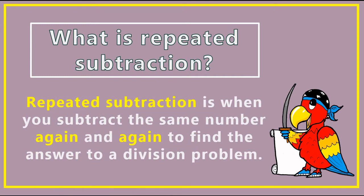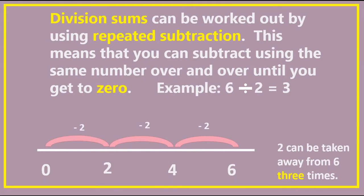Repeated Subtraction is when you subtract the same number again and again to find the answer to a division problem. Division sums can be worked out by using Repeated Subtraction. This means that you can subtract using the same number over and over until you get to zero.